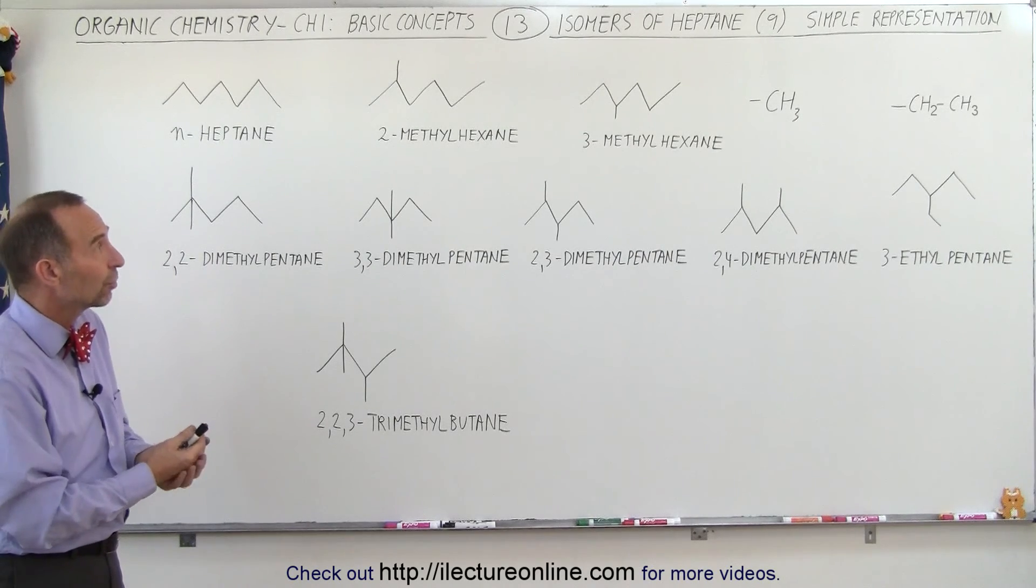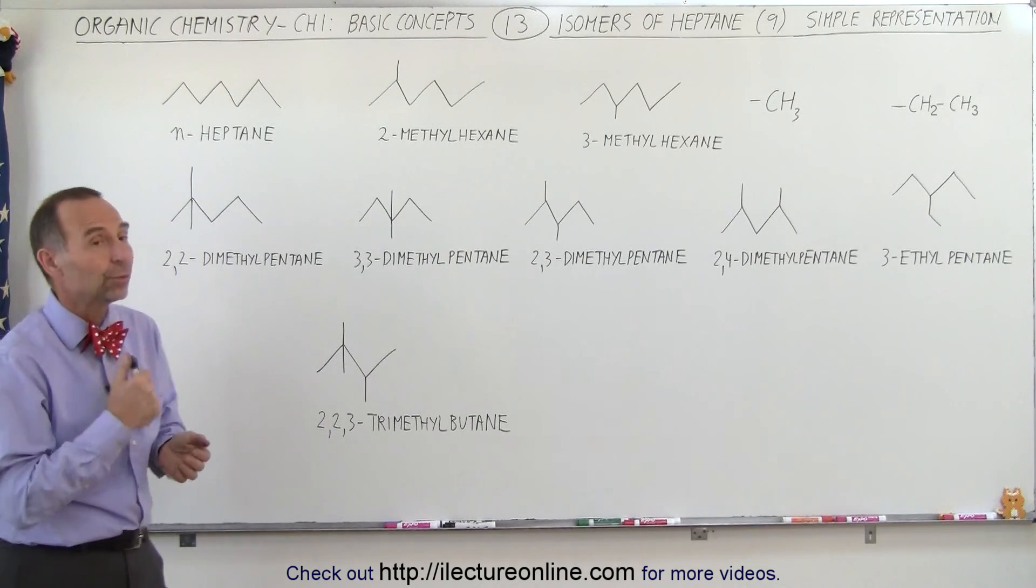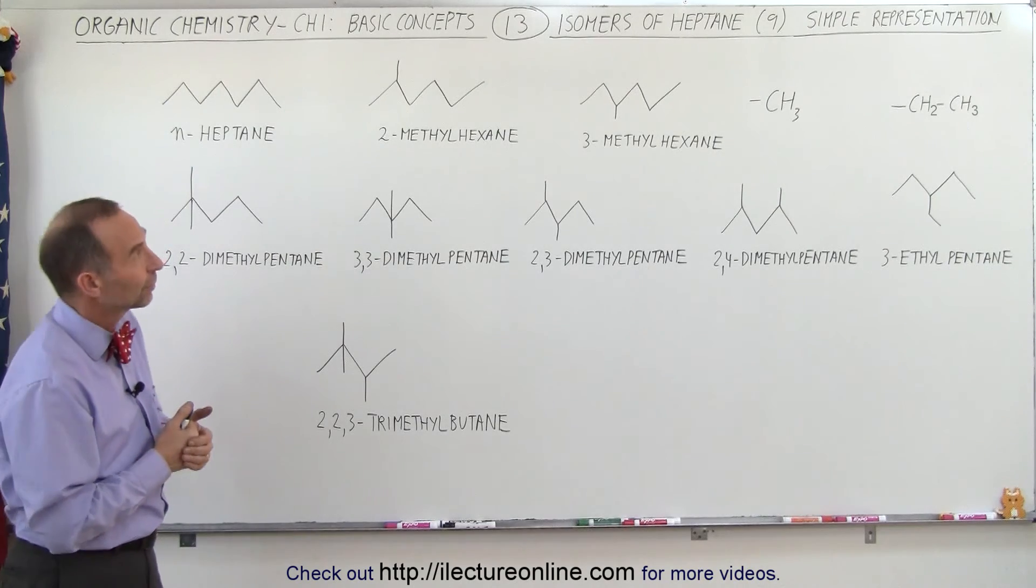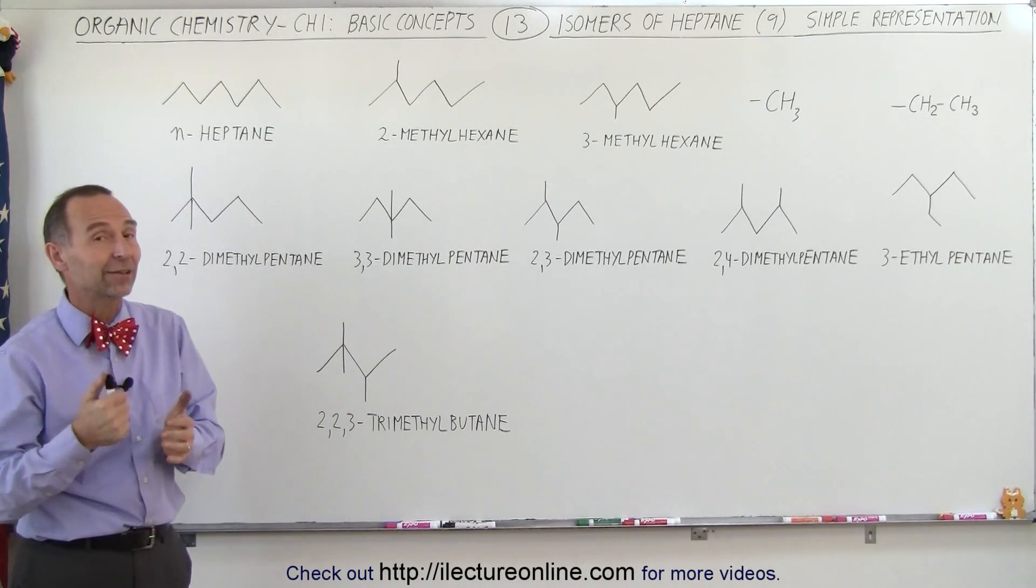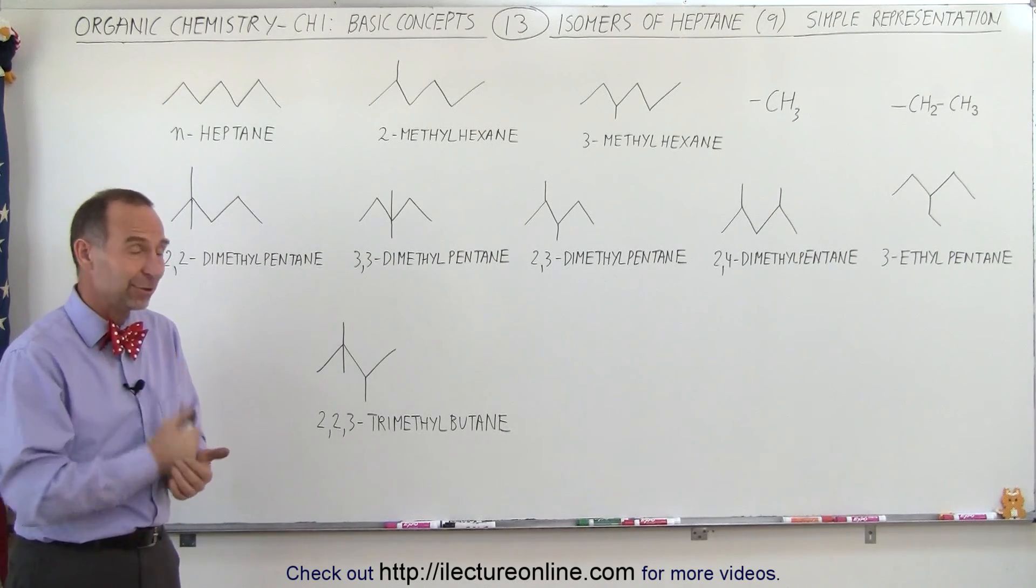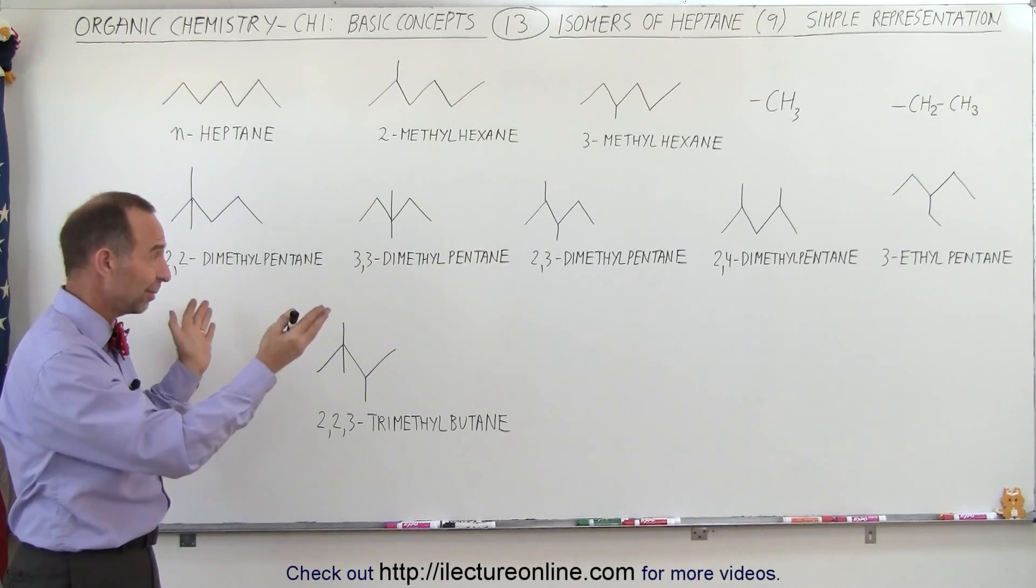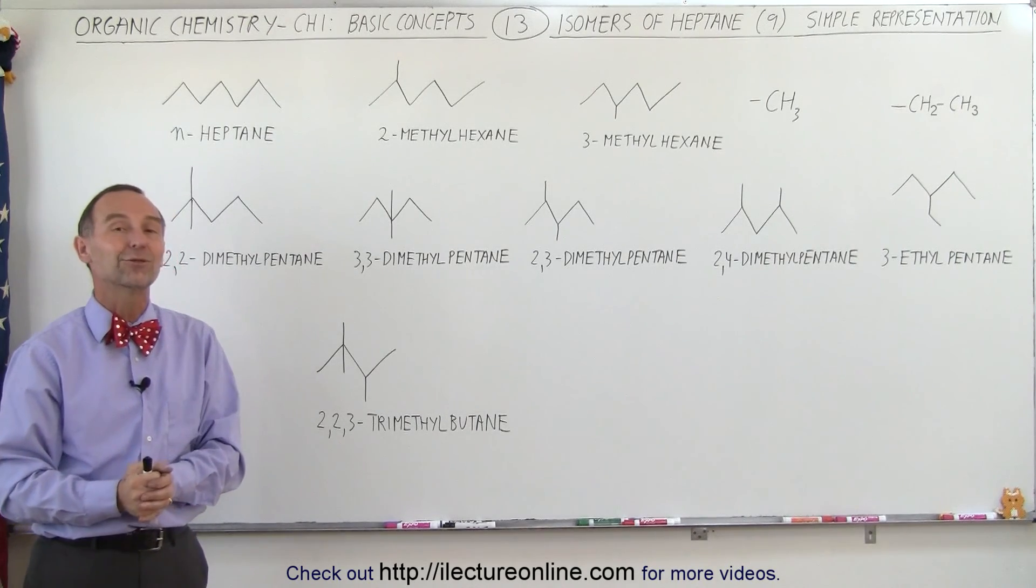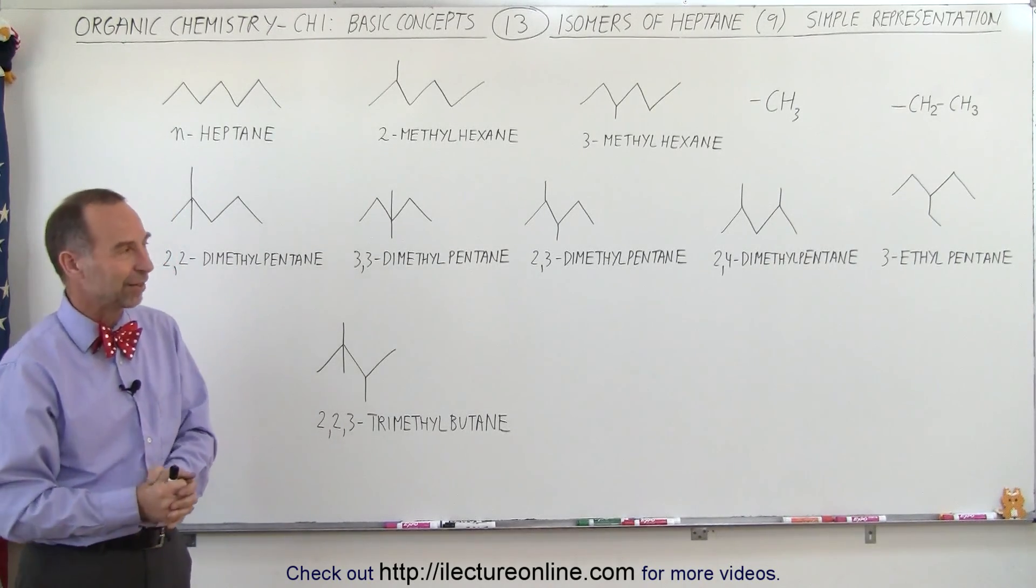And those are the nine isomers of heptane. So we'll now go to the next. We'll go and look at octane and see how many isomers are there. And again, using the simple format makes it quite easy to draw all of them on a single board. That's how it's done.